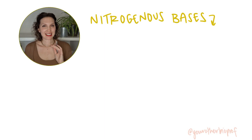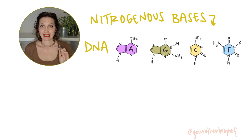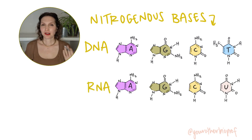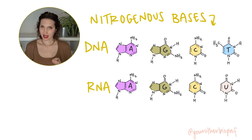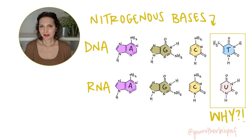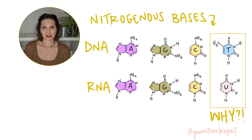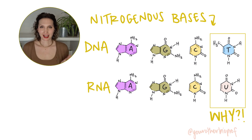The bases in DNA and RNA: AGCT in DNA, AGCU in RNA. In your class you probably talked about how DNA uses thymine and RNA uses uracil, but you might not have talked about why. Hi biology friends, it's Sarah, your other biology professor. Let's talk about uracil and thymine.